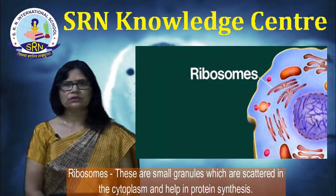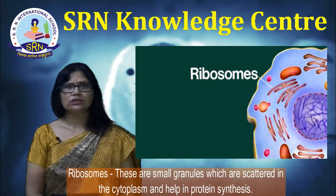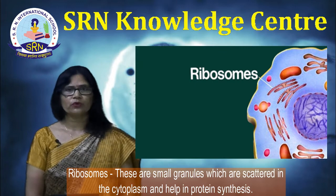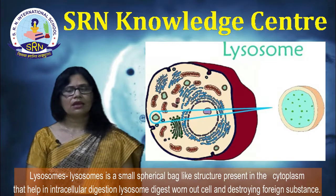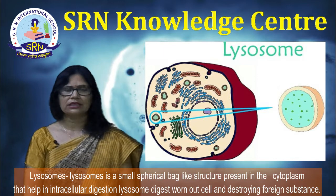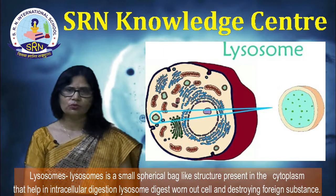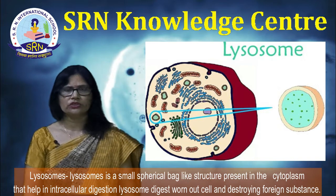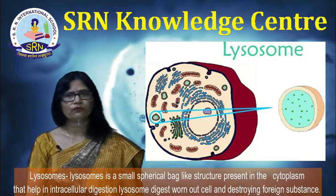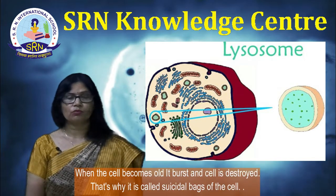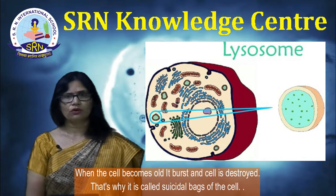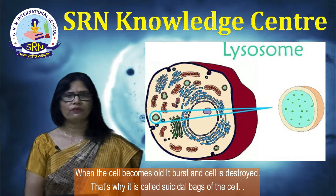Ribosomes are small granules scattered in the cytoplasm and help in protein synthesis. Lysosomes are small spherical bag-like structures present in the cytoplasm. They help in intracellular digestion. Lysosomes digest worn-out cells and destroy foreign substances. When the cell becomes old, it bursts and the cell is destroyed.